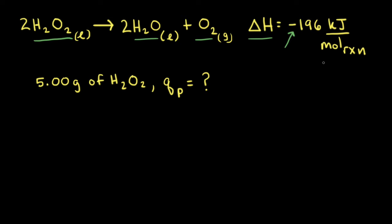What kilojoules per mole of reaction is referring to is how the equation is written. If we look at this balanced equation, there's a coefficient of two in front of hydrogen peroxide. Therefore,